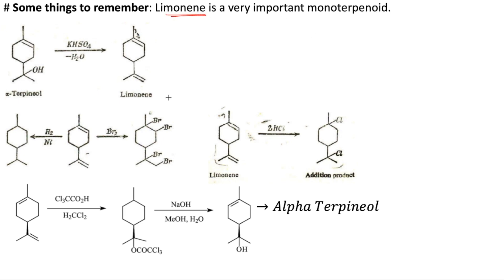Limonene is one of the most important monoterpenoids. It can be formed from alpha-terpenol by reaction with KHSO₄ — a dehydration reaction — to give limonene. Limonene can undergo hydrogenation in the presence of nickel as a catalyst to reduce both alkene groups. Addition of bromine takes place on both alkene groups as well. Limonene can also react with HCl to give an addition product, and alpha-terpenol can also be formed back from limonene following a specific reaction mechanism.